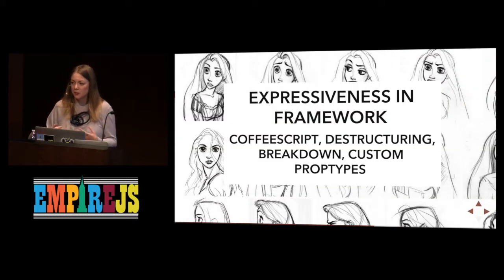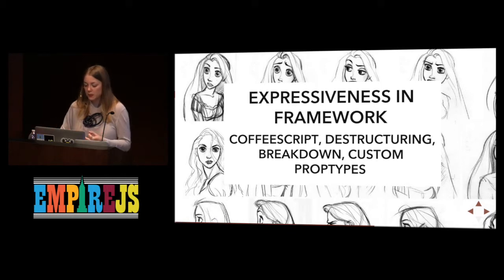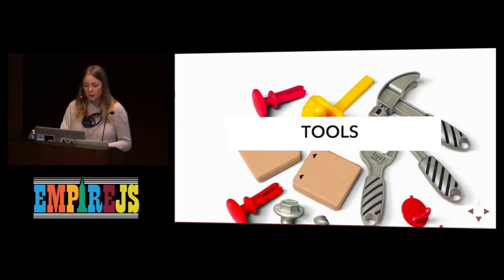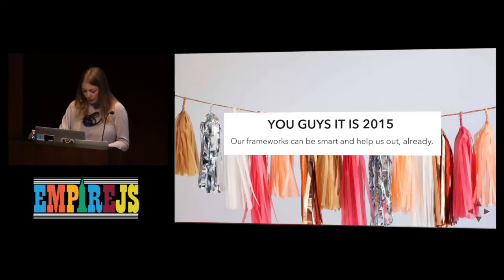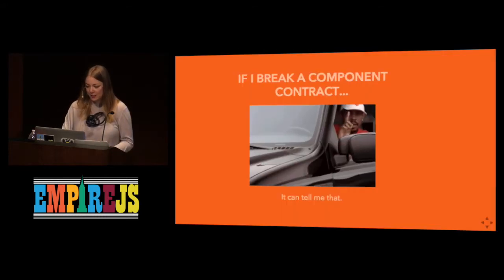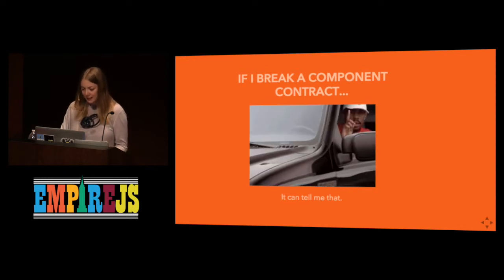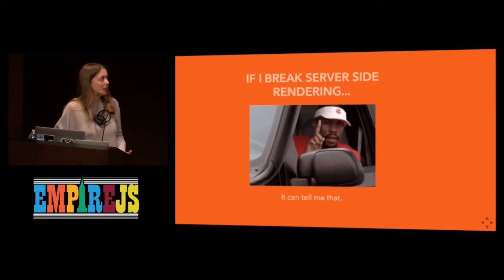So expressiveness in the framework: using CoffeeScript and ES6, destructuring, breaking components down super tiny, custom prop types. That brings us to tools. It's 2015 and our frameworks can be smart and help us out already. If I break a component contract, it should be able to tell me that. If I break server-side rendering, it should be able to tell me that too. And if I totally bust the virtual DOM by duping keys, it should also be able to tell me that.